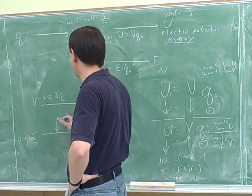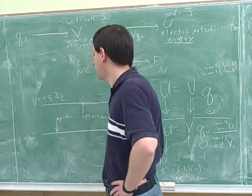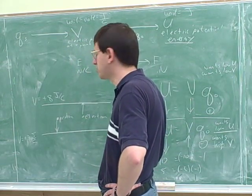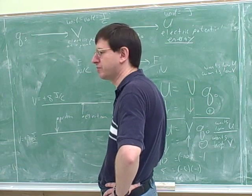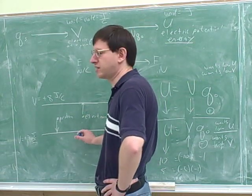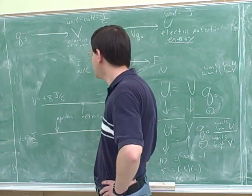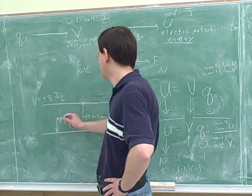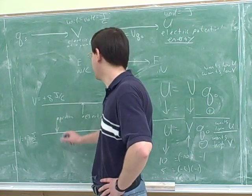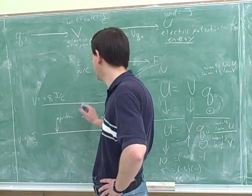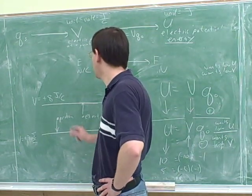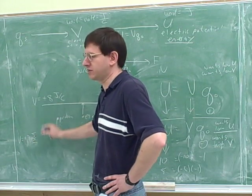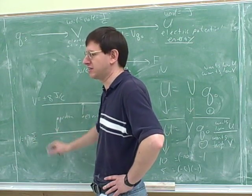Which of these two plates has the lower potential — the top or the bottom? The bottom. Yeah, the bottom has the lower potential. But which plate will you have the lower energy at? That depends on what charge you're focusing on. The proton has lower energy at the bottom, but the electron has lower energy at the top. But it doesn't matter what type of charge you're focusing on — that doesn't change the potential, because the potential is a characteristic of the space, not of the charges.